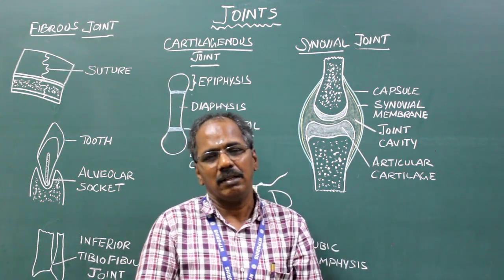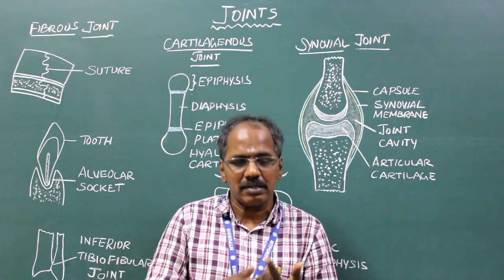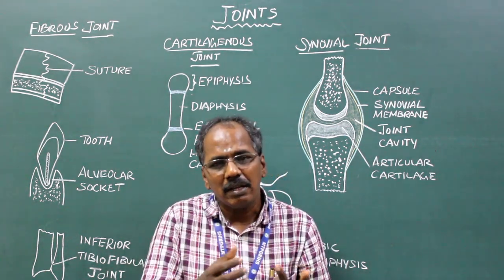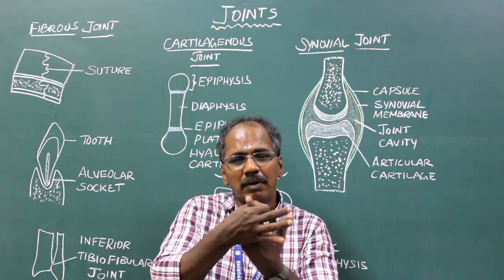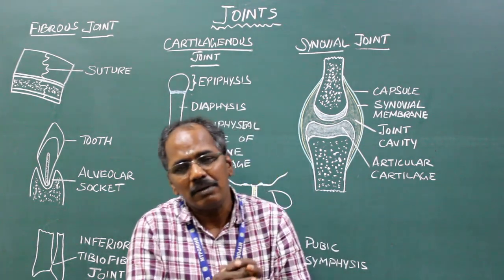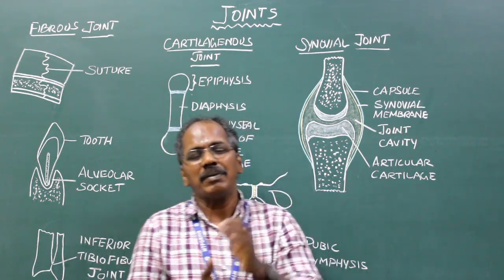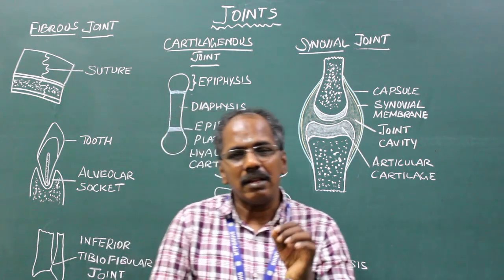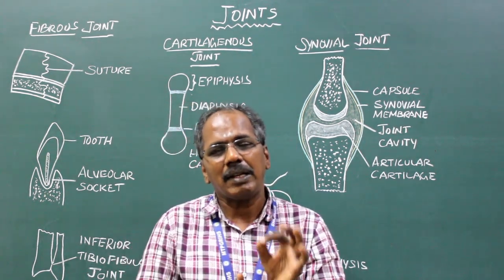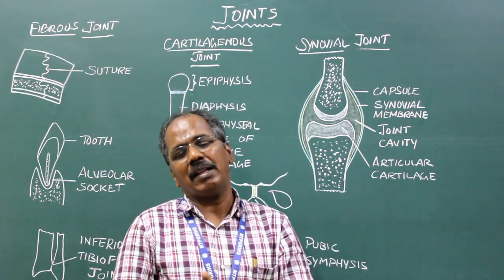Pivot variety. In this type of joint, one of the articular ends is peg-like or cone-like in structure, which articulates within a ring formed partially by bone and partially by ligament. Examples include the superior and inferior radioulnar joints and the median atlantoaxial joint.